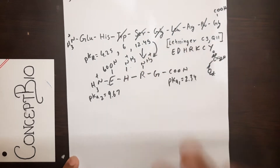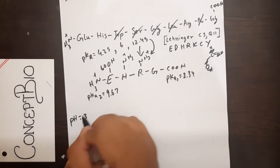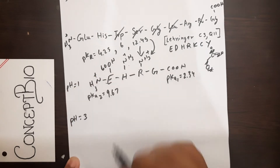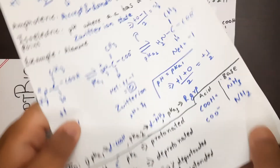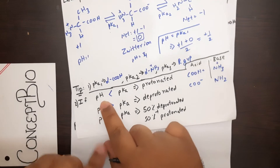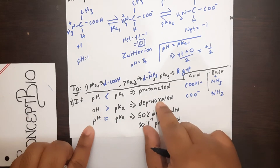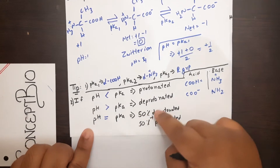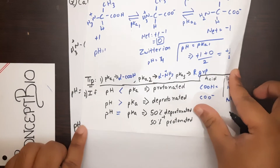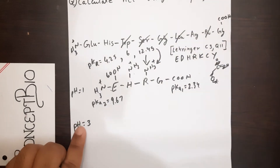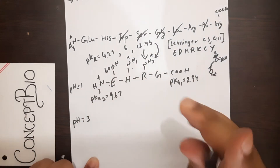Now, on the left-hand side, write pH equals 3, starting from pH equals 1 where everything is protonated. The rule is: if pH is less than pKa, protonation occurs; if pH is greater than pKa, deprotonation occurs; if pH equals pKa, 50% protonation and 50% deprotonation. At pH 1, everything is protonated.